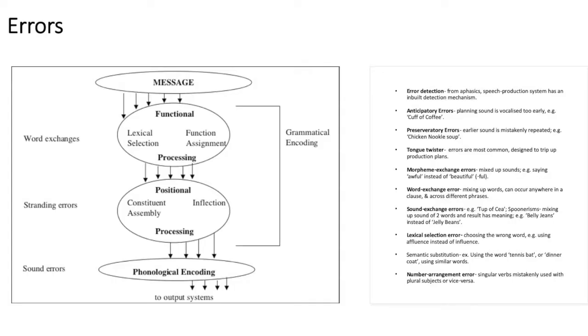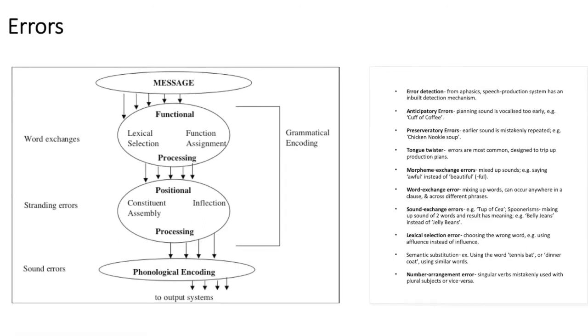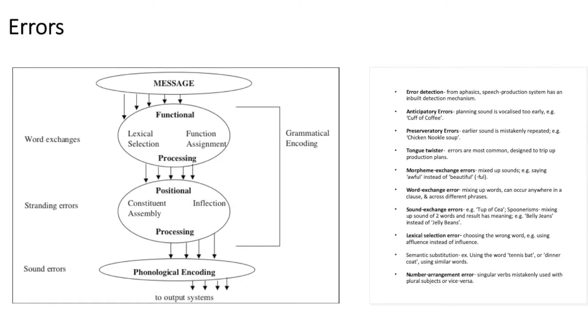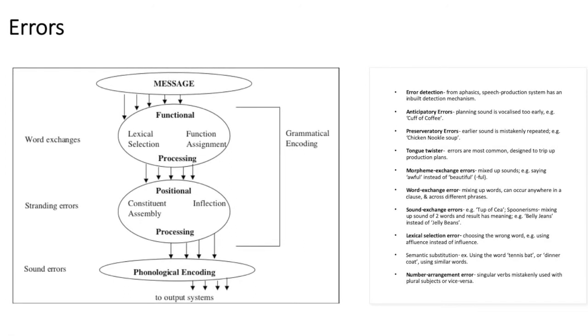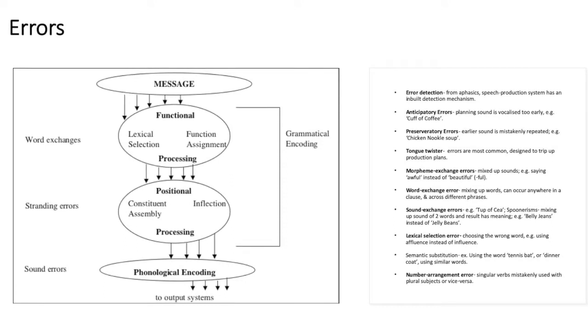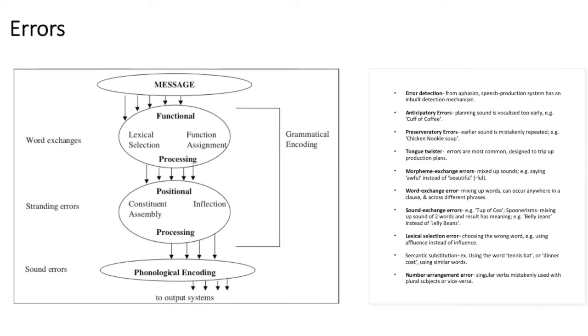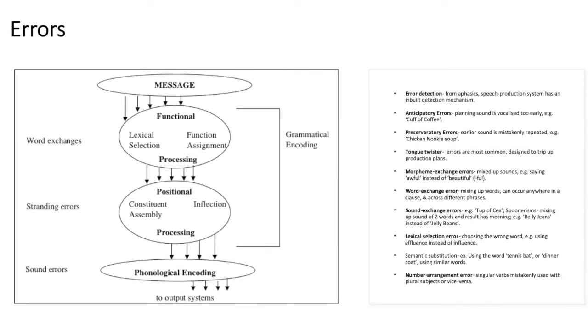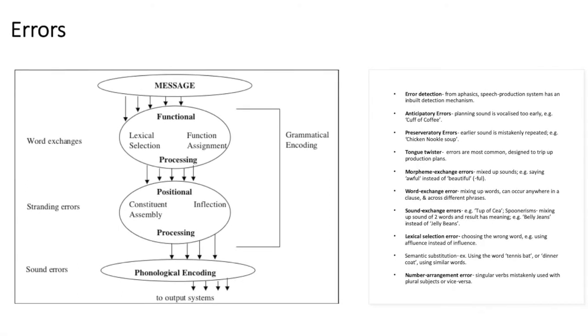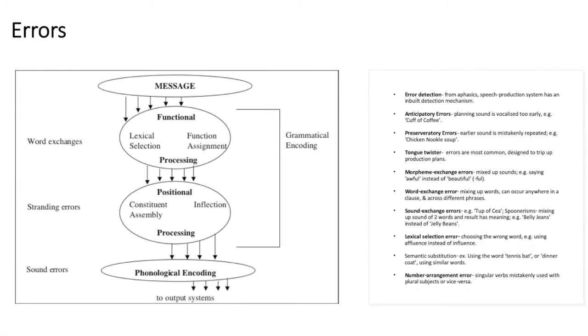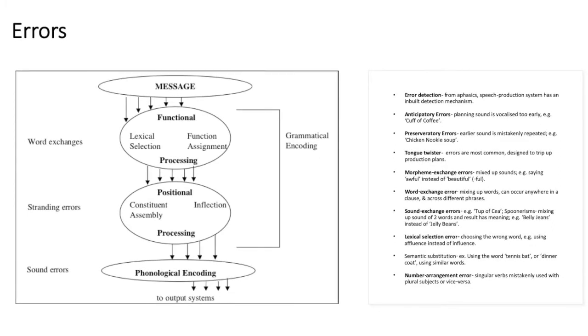Errors. In error detection, usually individuals with aphasia do not pick up on their errors. Error detection is a speech production system that has an in-built detection mechanism. It includes anticipatory, which is planning for sounds that are vocalized too early. So for example, a cuff of coffee. There are also preservatory errors, which are earlier sound is mistakenly repeated, such as chicken nuku soup. The K sound is preserved.